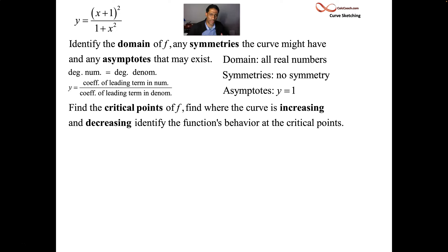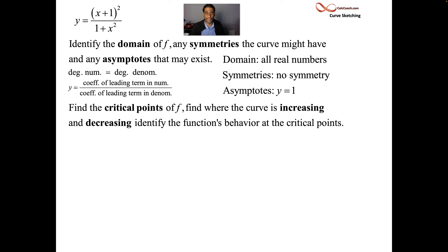Calculus: let's take the derivative, set it equal to 0, find the critical numbers, and from there find out where the function is increasing and where it's decreasing. We'll be able to know the nature of any critical numbers. It's going to be quite a quotient rule.